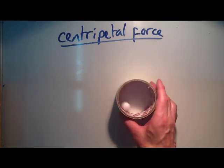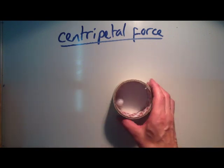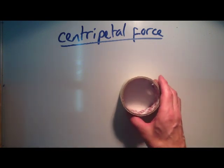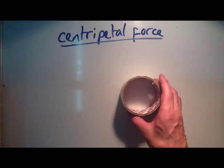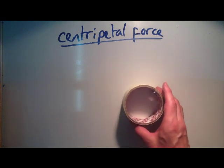If we remove the centripetal force, in this case it's given by the reaction force of the outside of this tube pushing the ball bearing inwards around that track. If we remove it, the ball bearing travels off in a straight line according to Newton's first law.